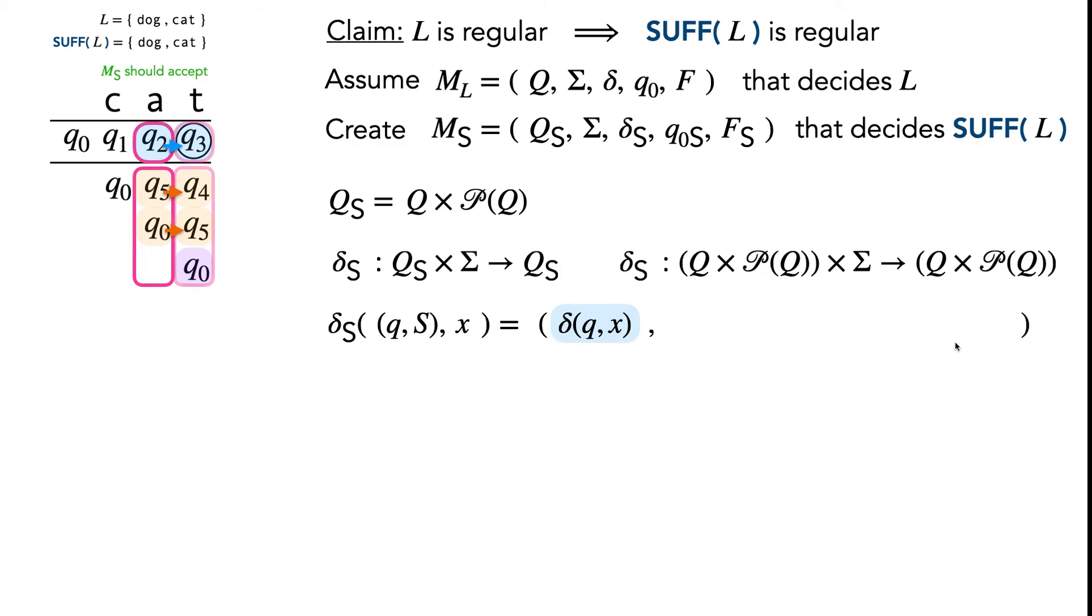Then for the set of states, this consists of the union of two parts. First is transitioning everything that was already in the state, and the second is opening up a new thread. Transitioning everything that was already in the state looks like this: we transition each little s inside of our big set S using the character we just read.